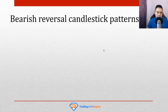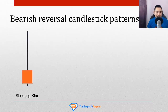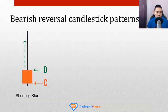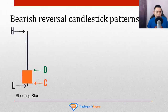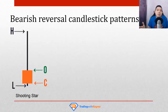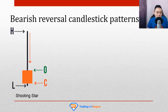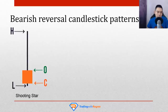The opposite is the bearish reversal candlestick pattern. The first is called a shooting star — the inverse of a hammer. It's a red candle where buyers pushed the price all the way up to the high of the day, then sellers came in, took control, and pushed the price near the lows of the day, closing near the lows. Initially buyers had the upper hand, but they were overwhelmed by the sellers towards the end of the day. That's a shooting star.